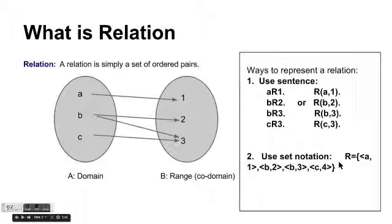And then another notation is to use a set. Actually, as we have the definition here, a relation is simply a set of ordered pairs. We can define a relation using the set notation. So, R equals a curly bracket, and use angle parenthesis to represent ordered pairs. A1, B2, B3, and C3.